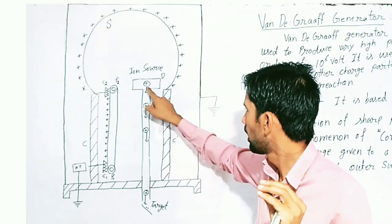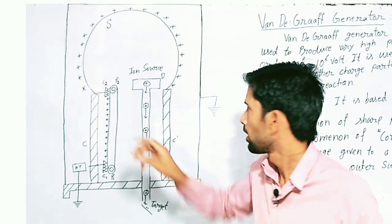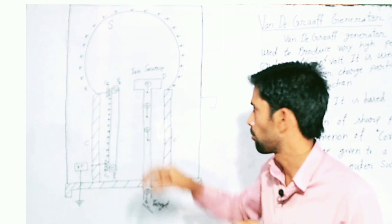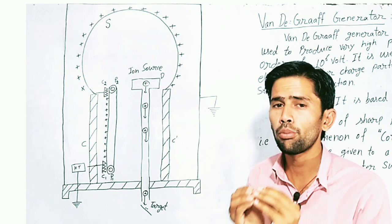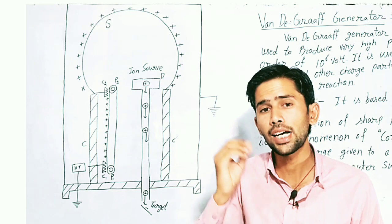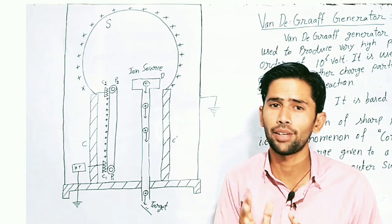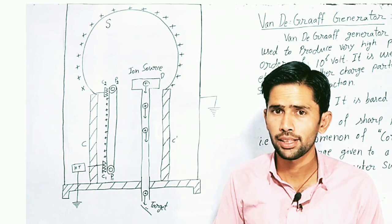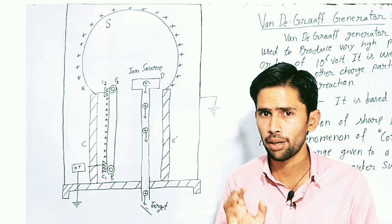This sphere has a high potential and this charge particle has a lot of potential energy which converts to kinetic energy. If any atom or molecules need to undergo nuclear reaction, then this high energy particle will bombard the target. So this is a Van de Graaff generator which generates high potential to accelerate charged particles for nuclear reactions.